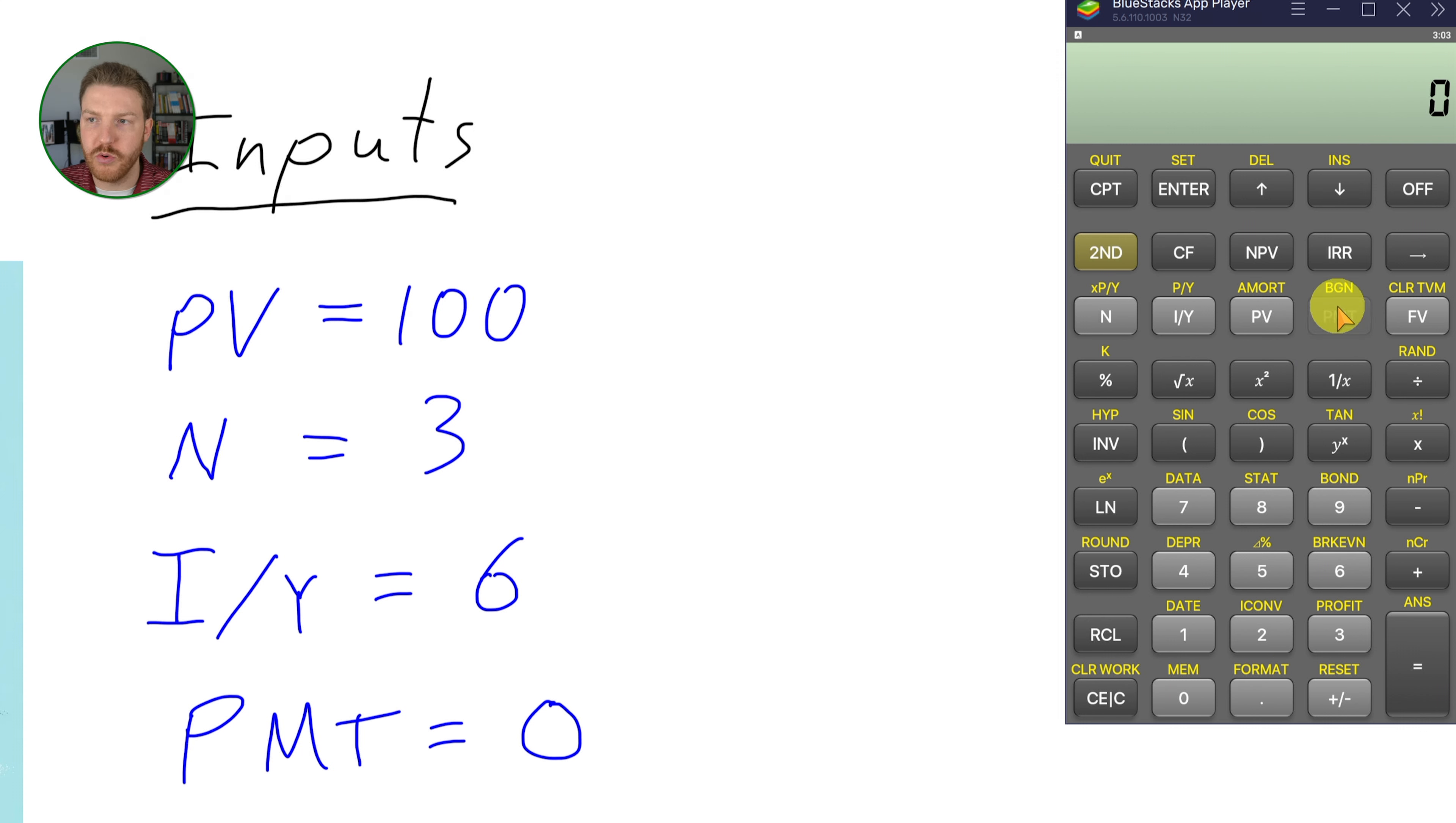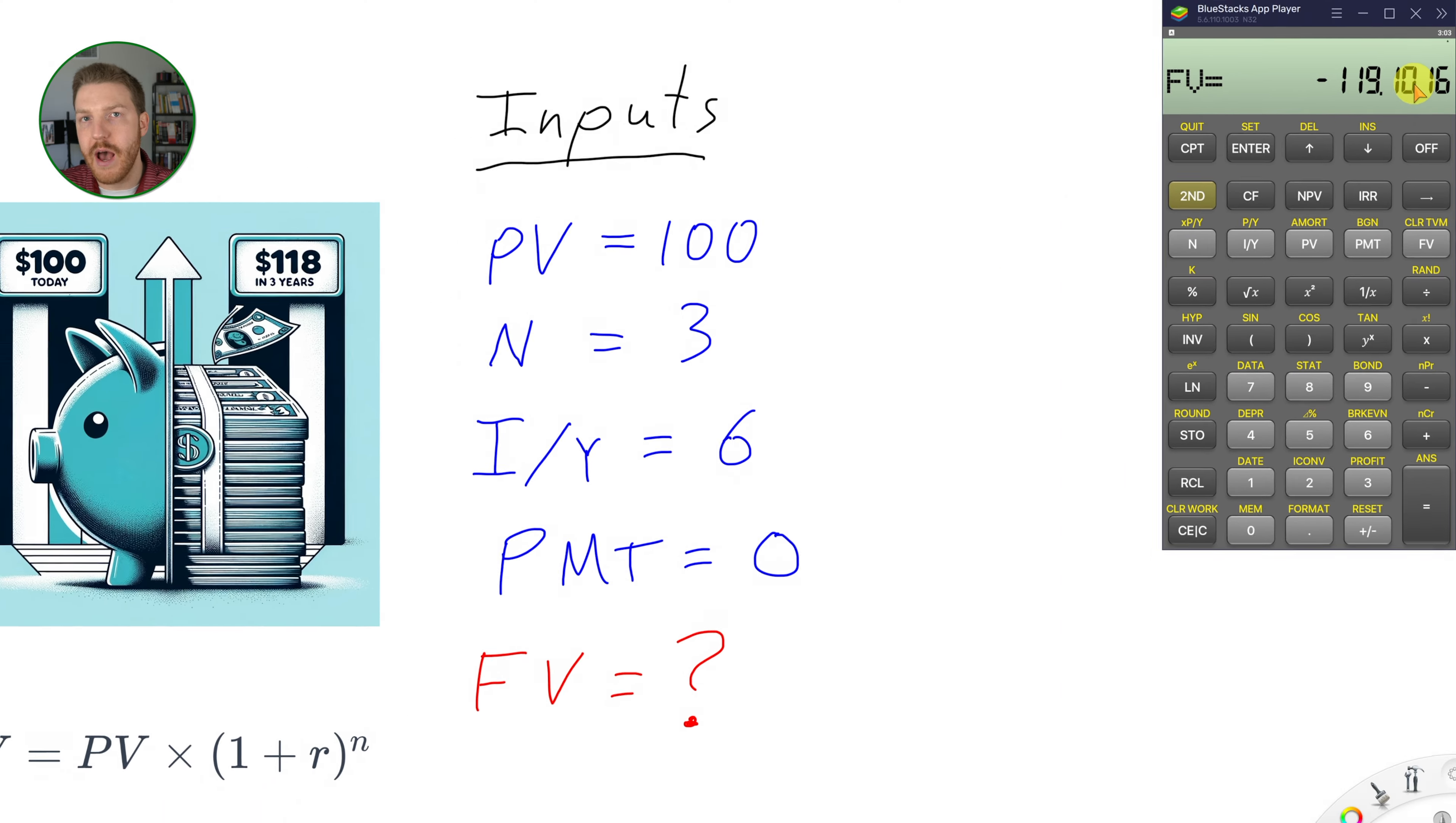And now future value is what we can compute for. So we'll hit compute future value. And we find that at a 6% rate of interest, $100 should turn into $119.10 three years from now.